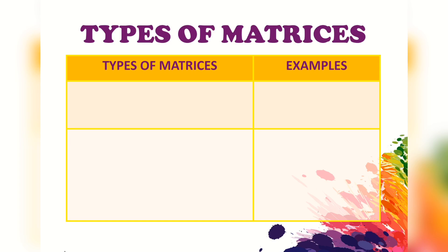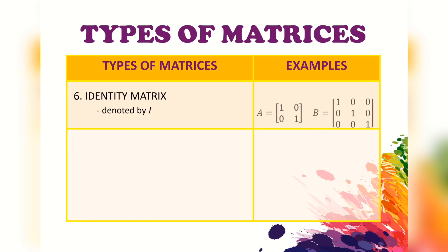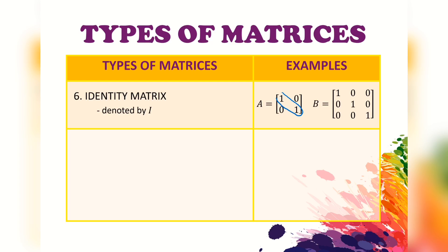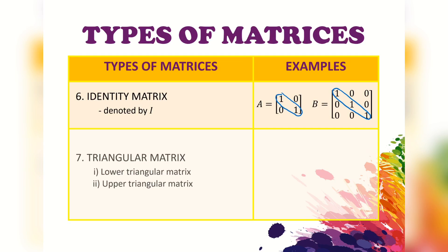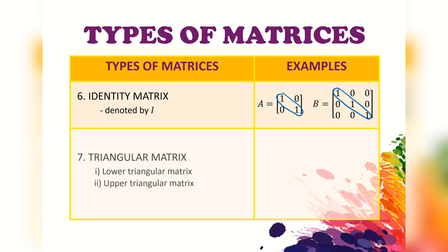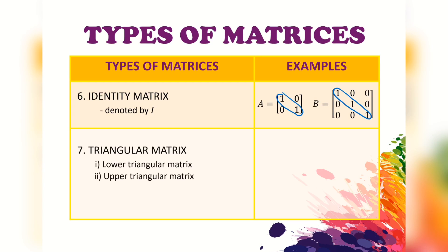Number six is the identity matrix, denoted by the capital letter I. In an identity matrix, the entries on the main diagonal are always one, and outside the main diagonal are always zero.